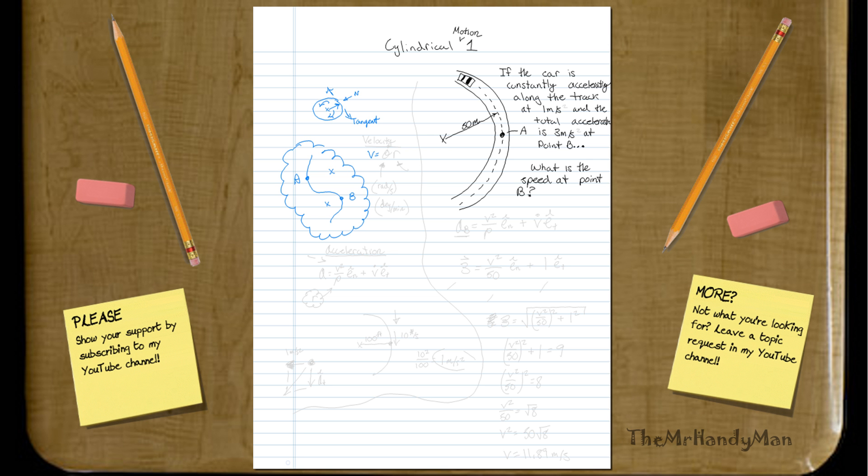V will be theta dot times your R. And R would be your armature, your arm length, basically the radius of your curve at that point. So, your radius of that circle that would be created due to that curve. And also, you have theta dot, which is your angular velocity.